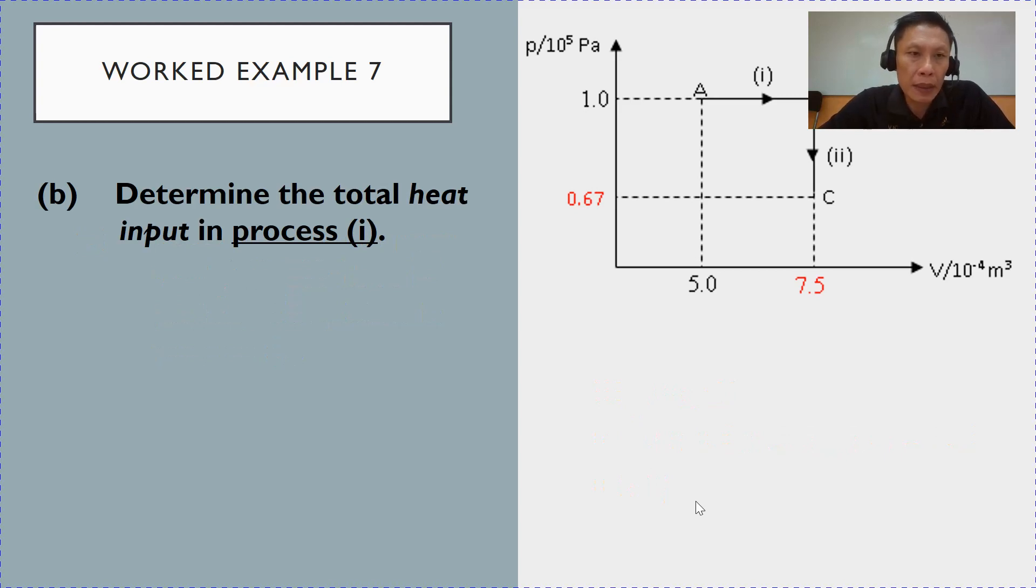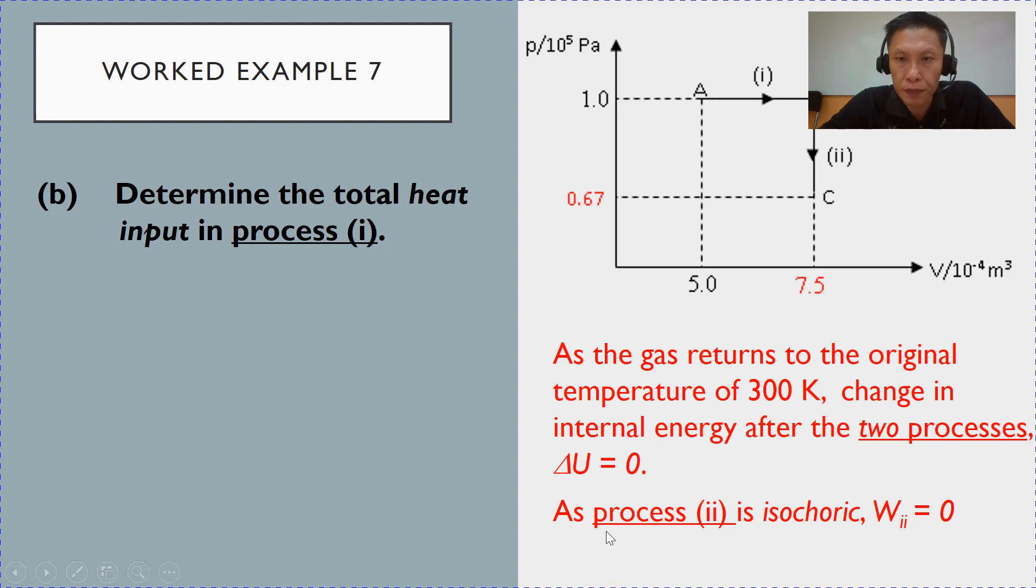Part B. Part B is the part that is a little bit complicated. So, we need to analyze it thoroughly. Part B asks you to determine the total heat input, so the heat supplied, in process 1. In process 1, what is the total heat supplied? Because not enough information to do using first law of thermodynamics. So, we need to also make use of process 2. That is the trick there.